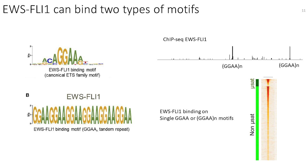EWS-FLI1 can bind two types of motifs. One is the ETS family member motif — a single GGAA with a few specific nucleotides on each side. EWS-FLI1 is able to bind to this kind of motif and somehow compete with normal, wild-type ETS members in the cells — this is one of the reprogramming events EWS-FLI1 performs to impair the function of wild-type ETS.